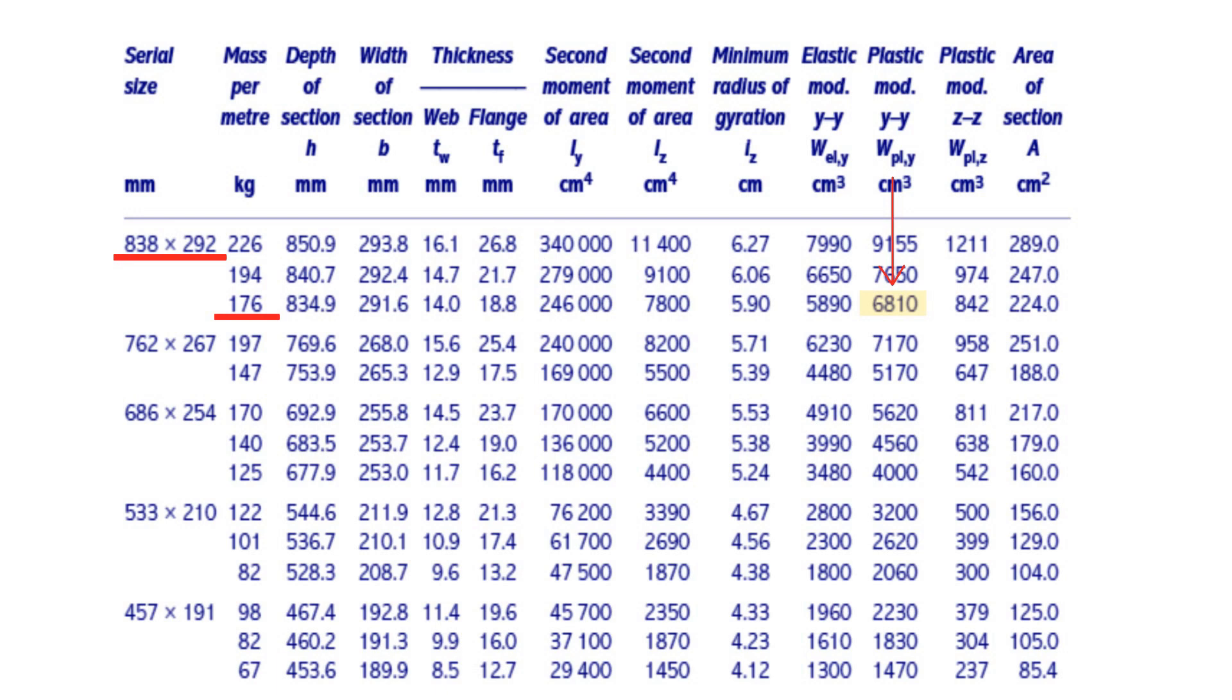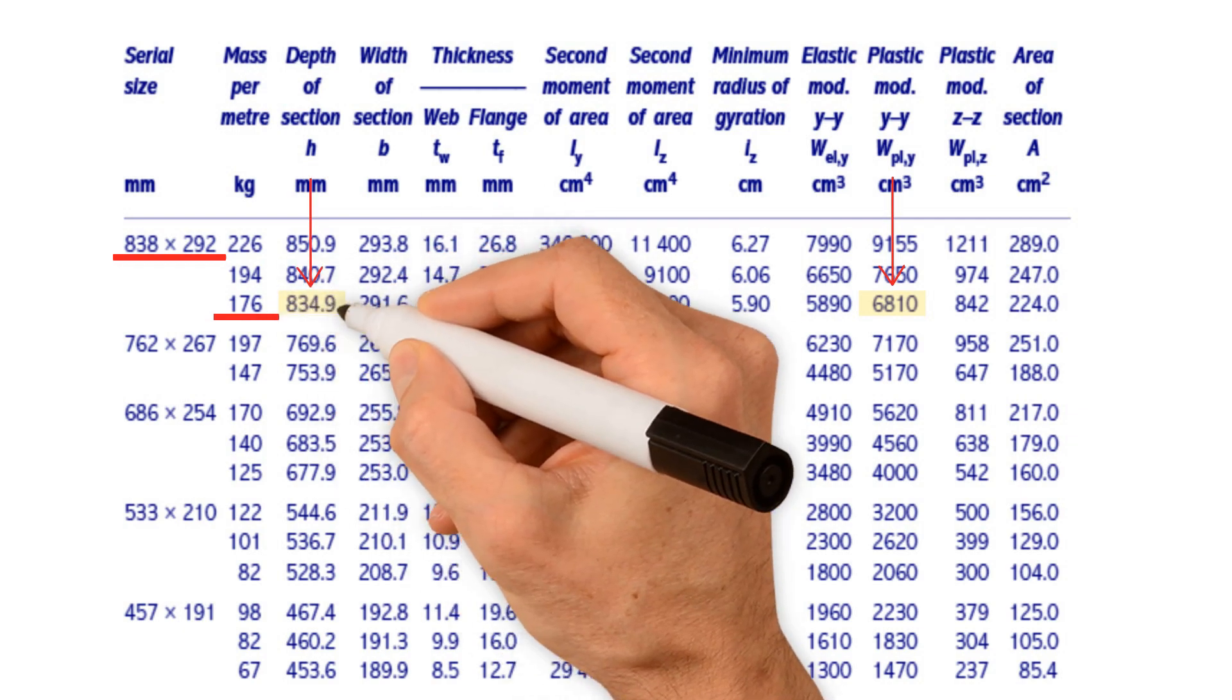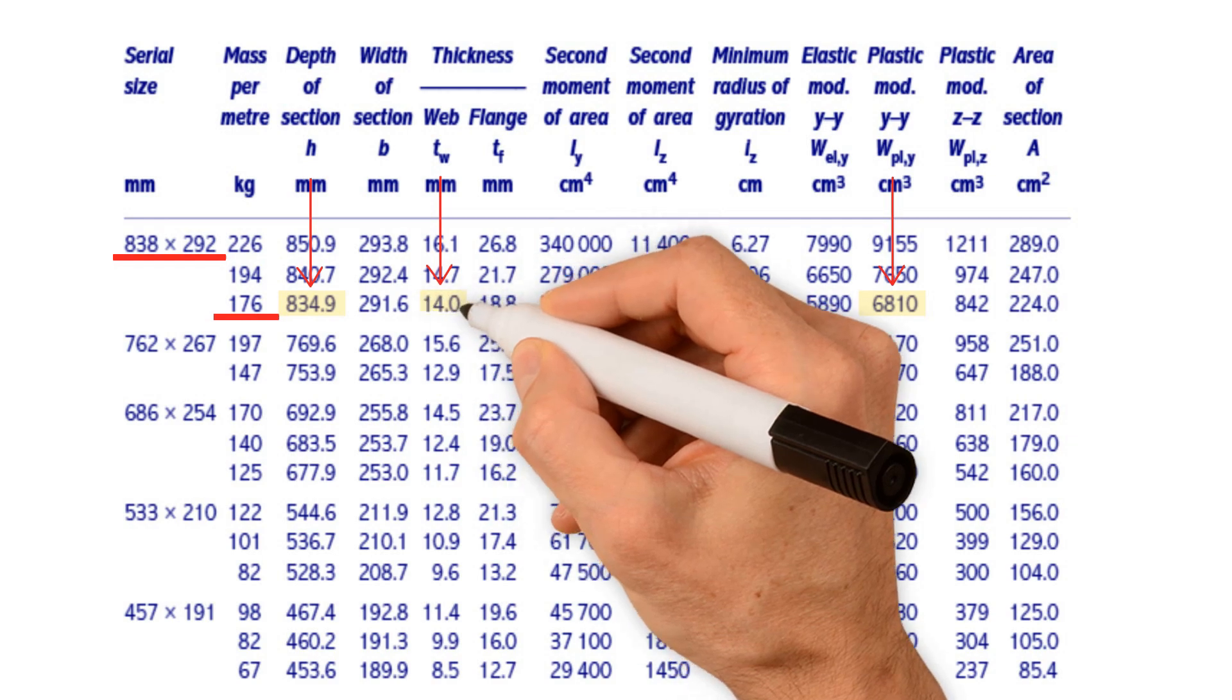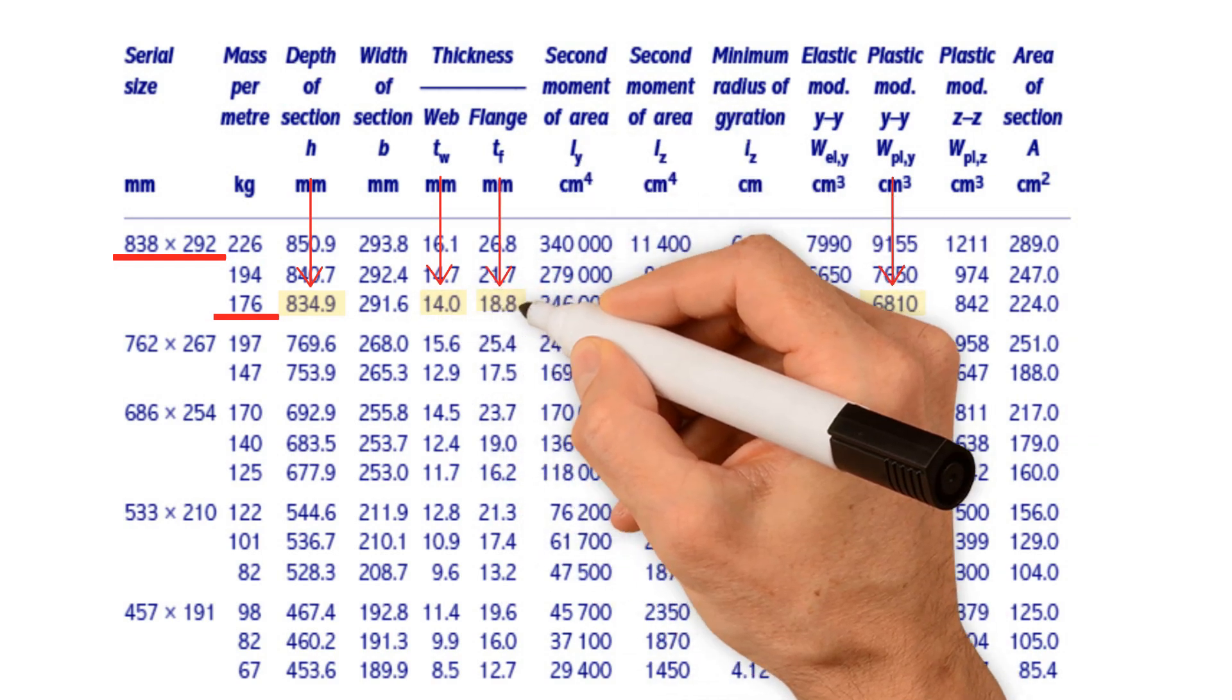Furthermore, we need to identify the depth of the section, which is 835 millimeters, and web thickness, which is 14 millimeters. Lastly, the flange thickness, which is 18.8 millimeters.